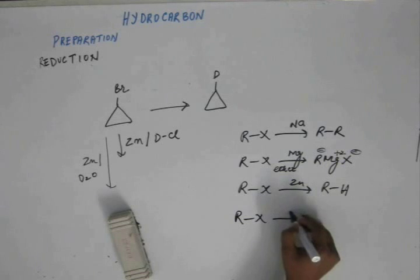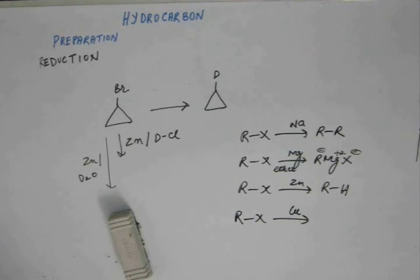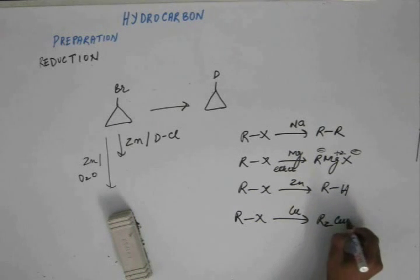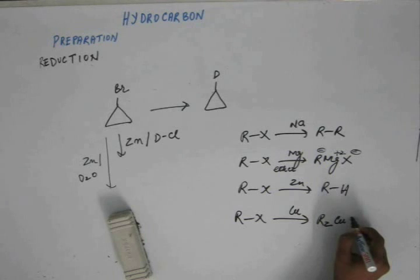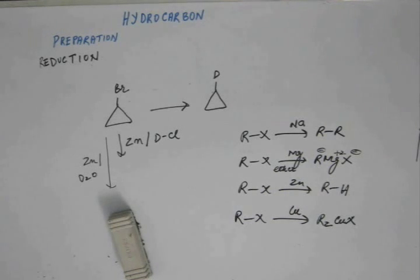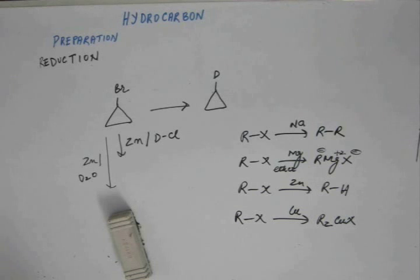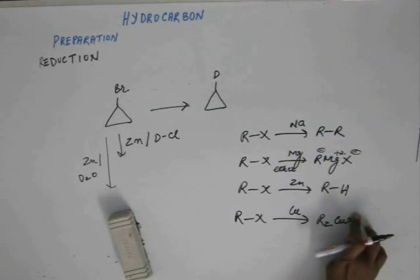Similarly, if we add copper to this, this will form a Gilman's reagent. It will form R2Cu-Li, as we have R-Mg-X. Because this Cu is in the cuprous state.